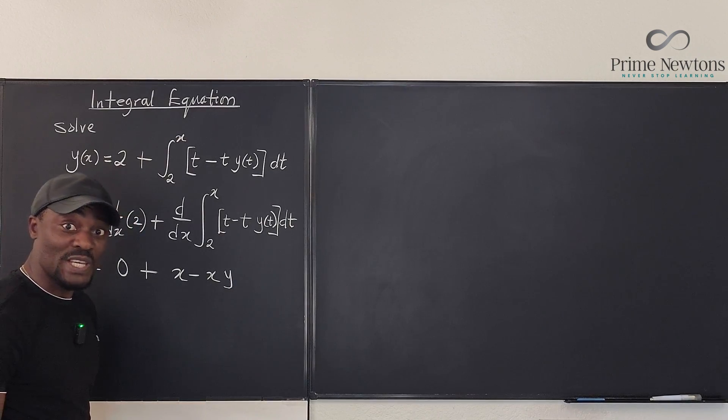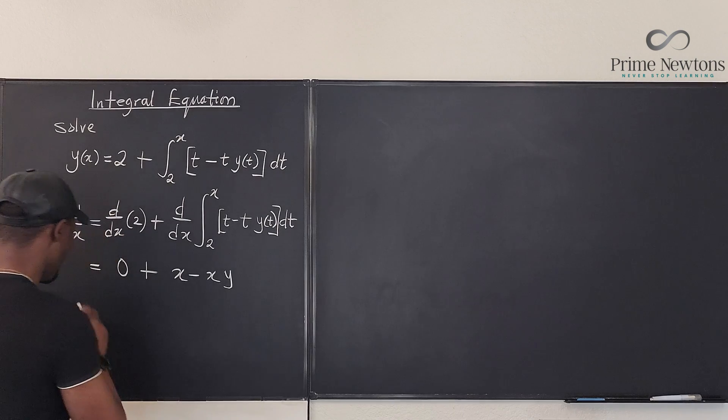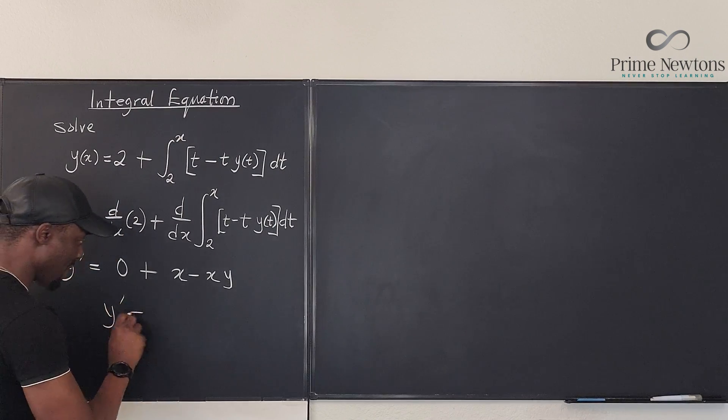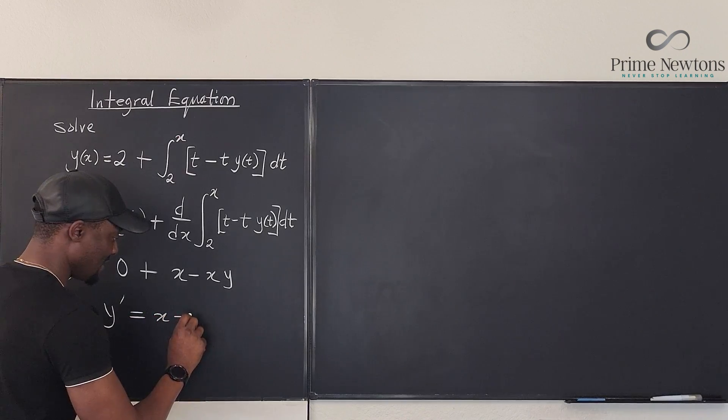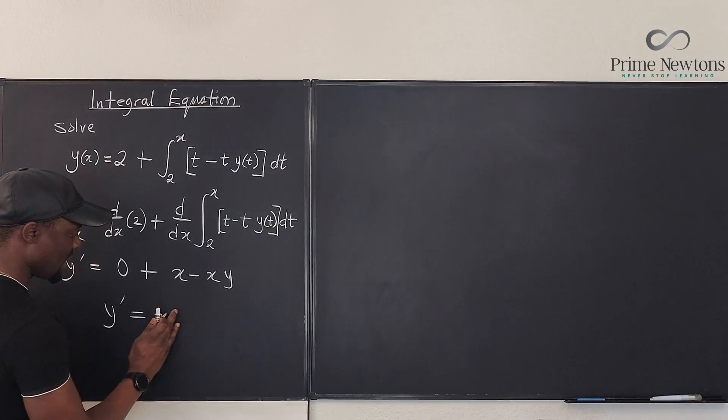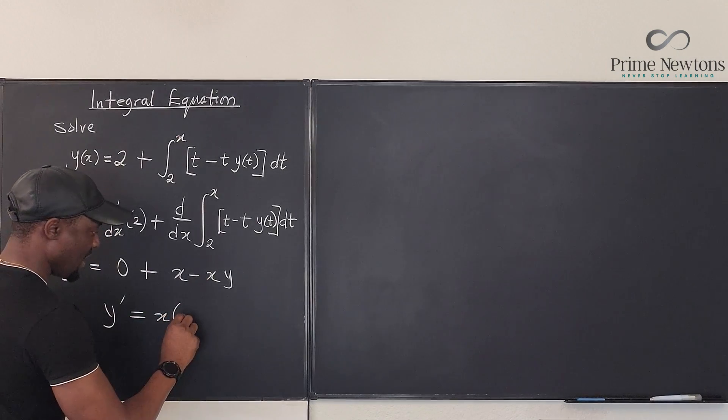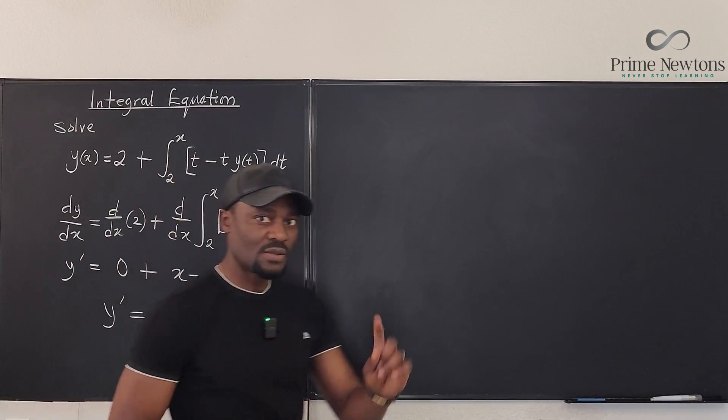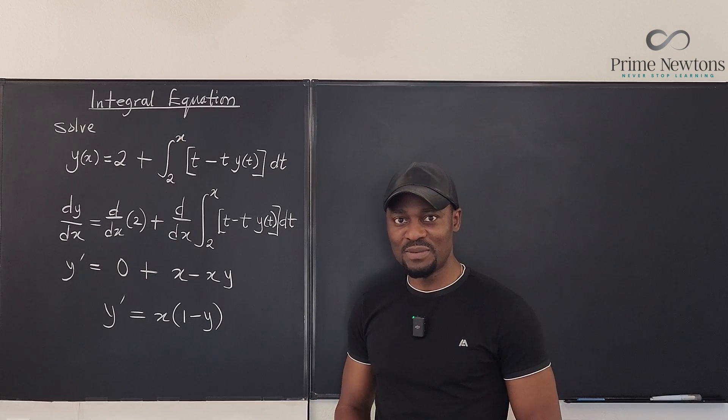It is so easy, right? So here, what we have, I can write as y prime. So this gives us a differential equation. Y prime equals x minus xy. In fact, I can factor out this x so that I have x(1 - y). Just one move. And life is just beautiful.